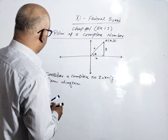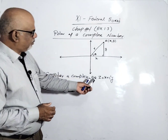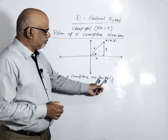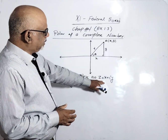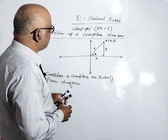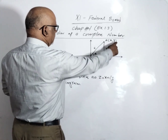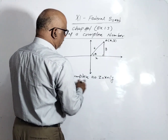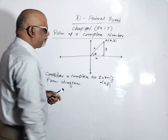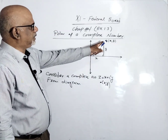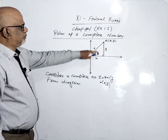We consider a complex number z = x + iy, and we consider this in the complex plane. If we write x + iy as an ordered pair, we can write it as (x, y). This forms a right angle triangle with perpendicular, base, and hypotenuse.